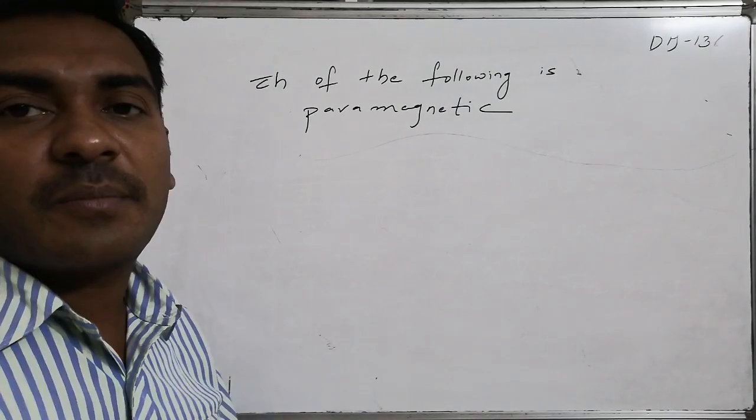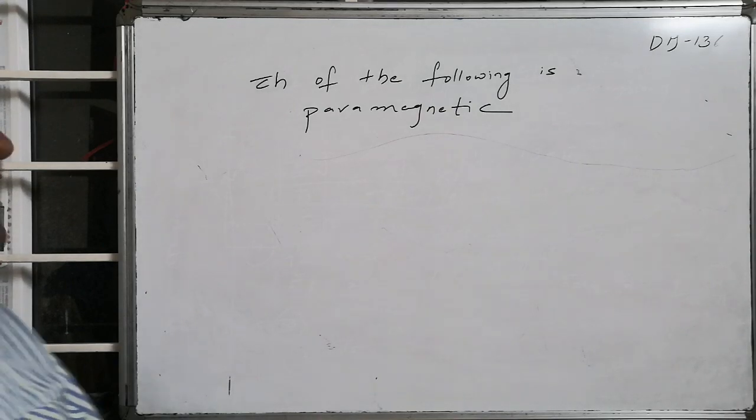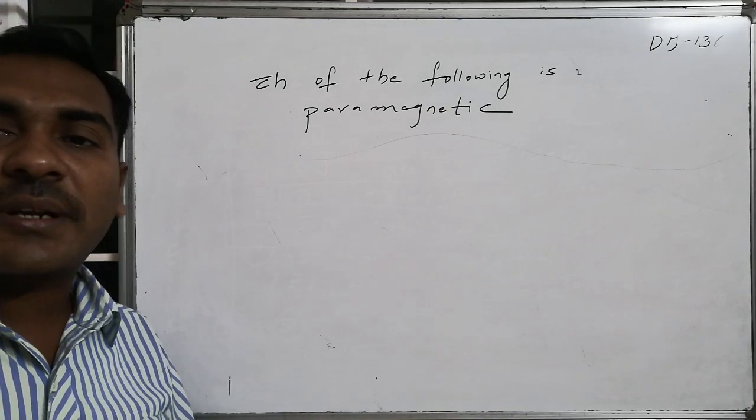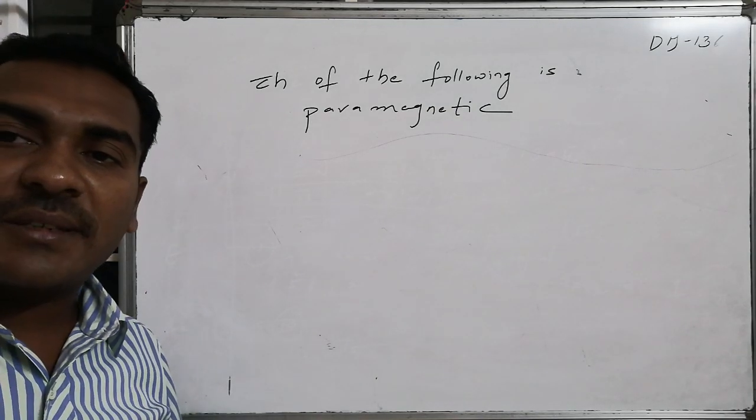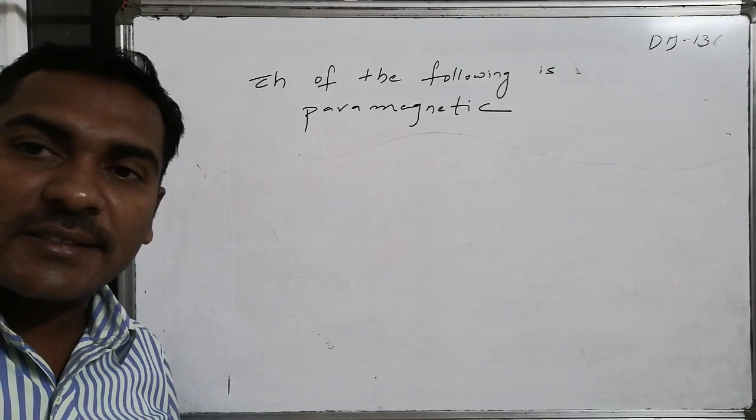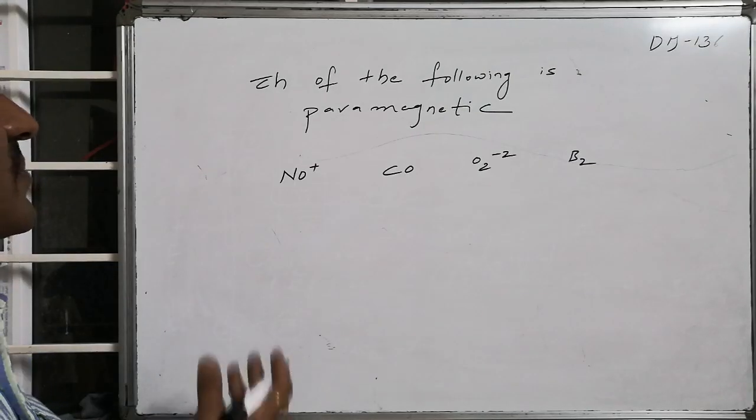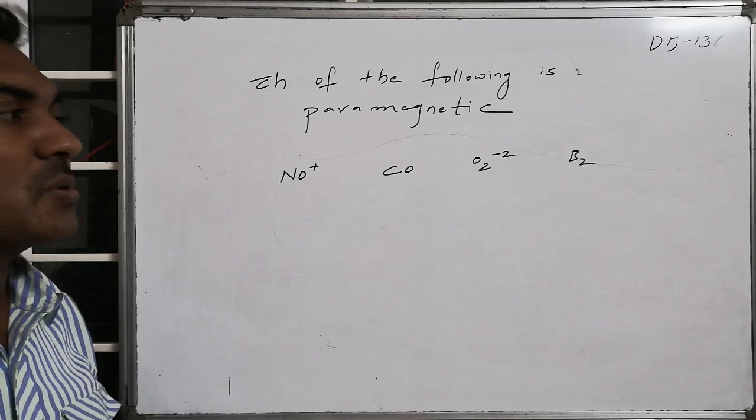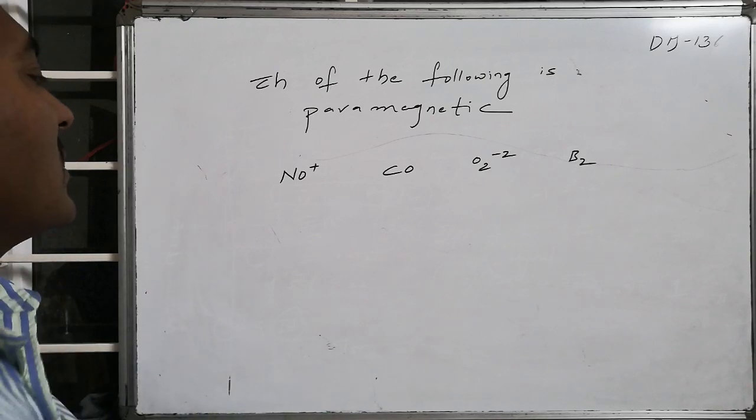Which of the following is paramagnetic? Different species are provided: NO+, CO, O2²⁻, followed by B2. You are asked to find out which of them is paramagnetic in nature.